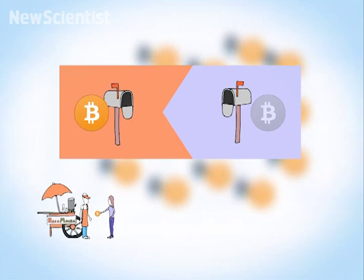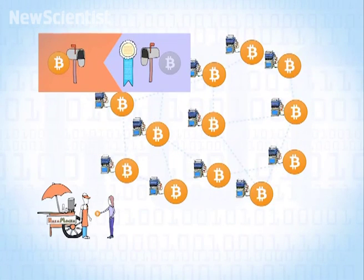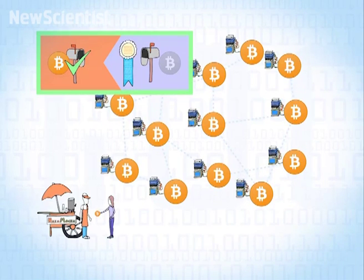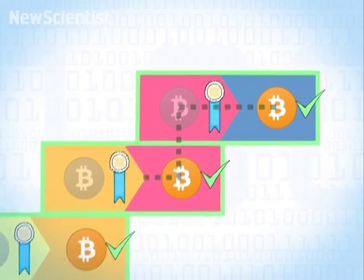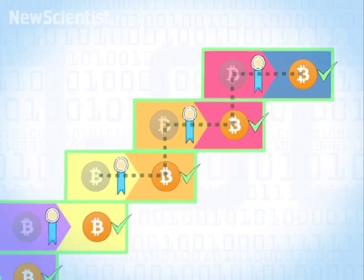Her wallet software digitally signs the message, which allows all of those mining computers to check that the transaction is for real. Because every owner digitally signs Bitcoin transactions, every Bitcoin has a mathematically verifiable chain of ownership.